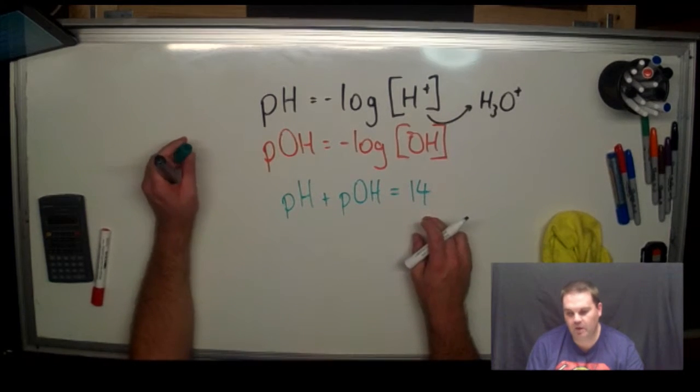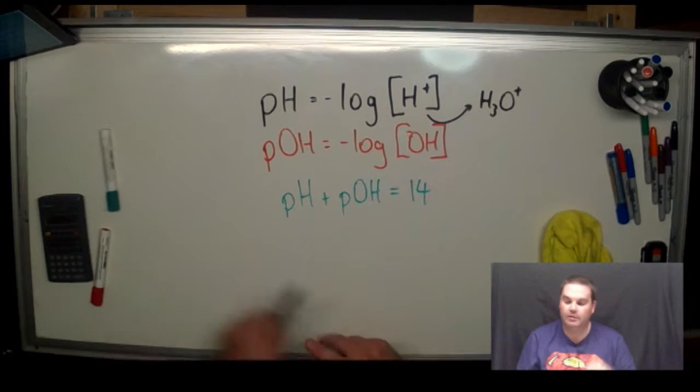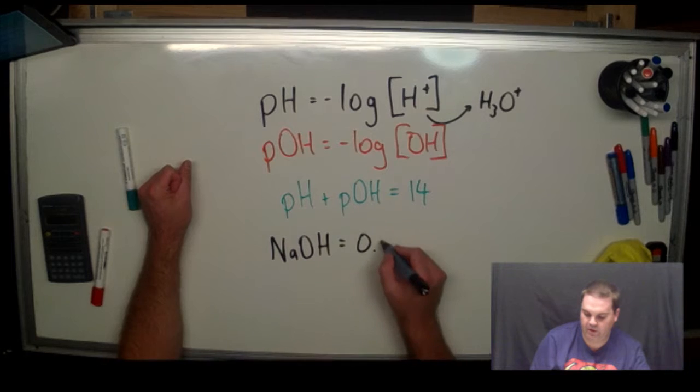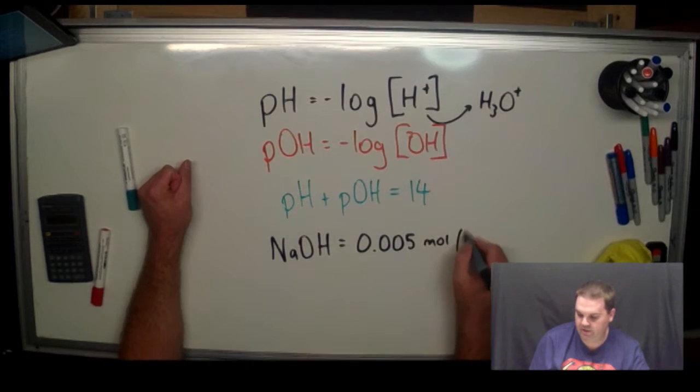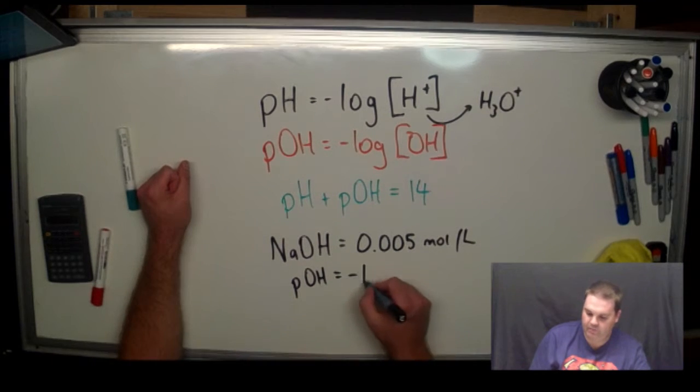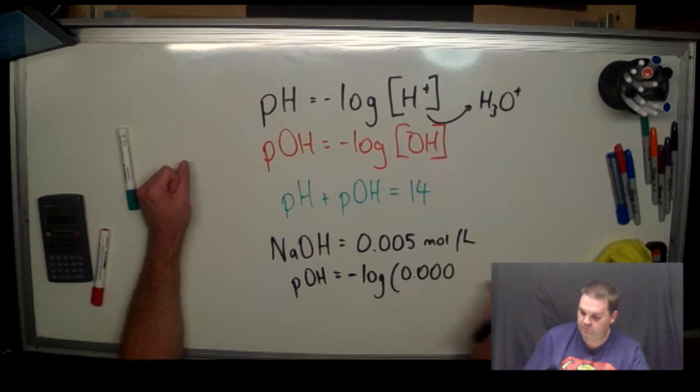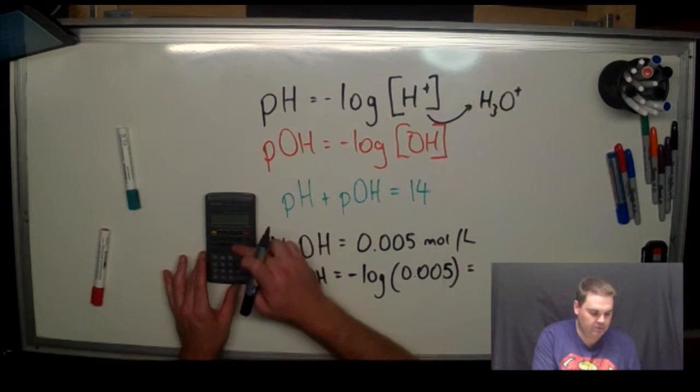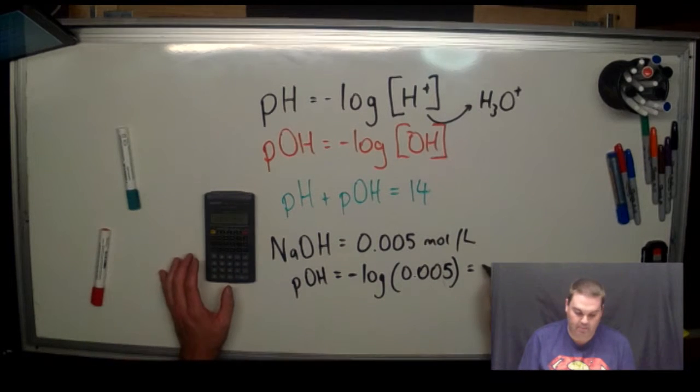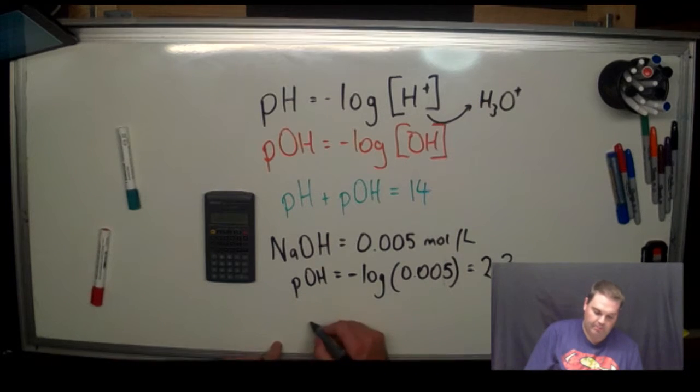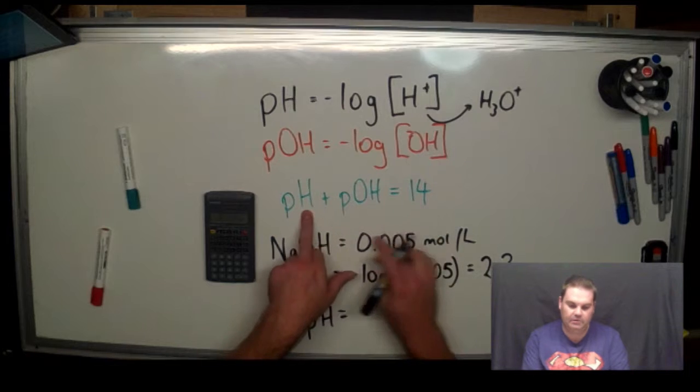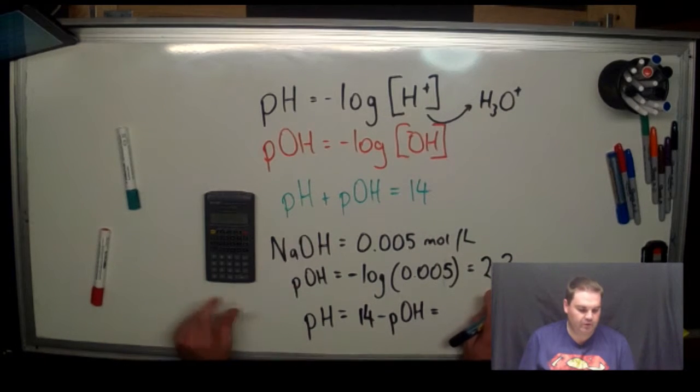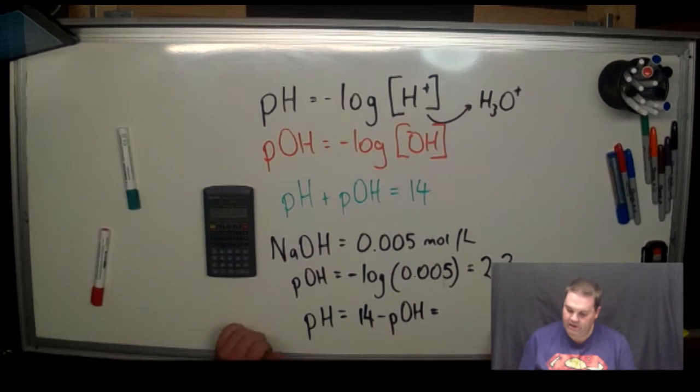So let's say we've got some sodium hydroxide concentration of 0.005 moles per litre. Our pOH is negative log 0.005, putting that in our calculator, so we've got a pOH of 2.3. So our pH, if we rearrange this, is 14 minus pOH, 14 minus 2.3. So our pH is 11.7.